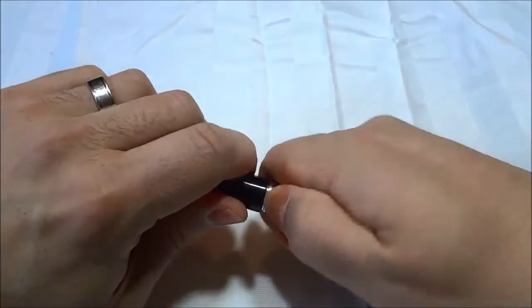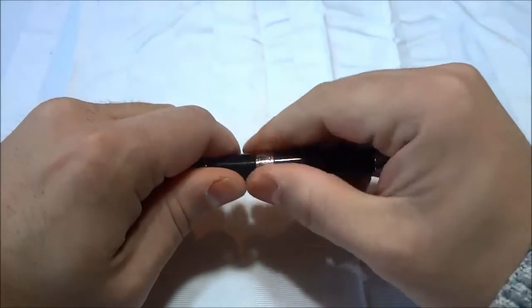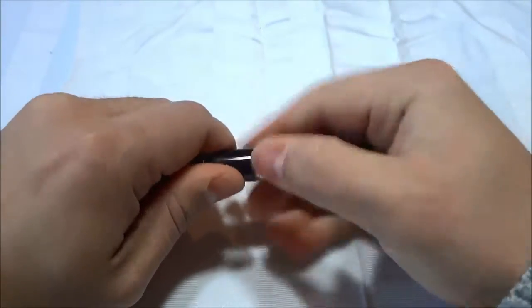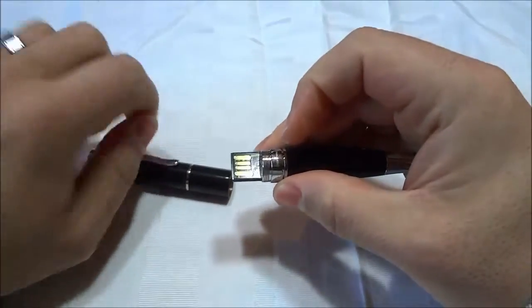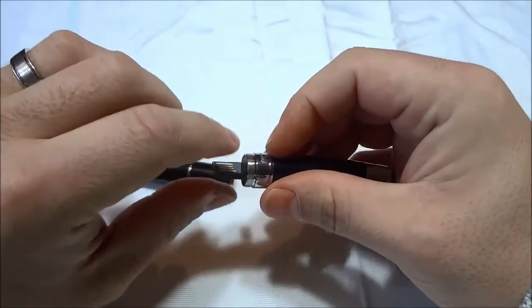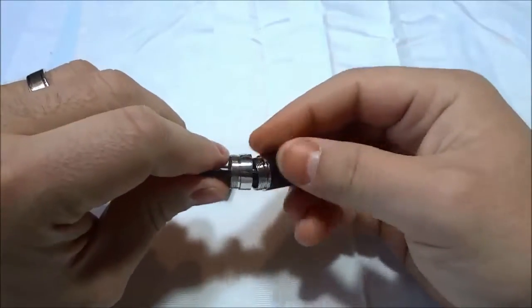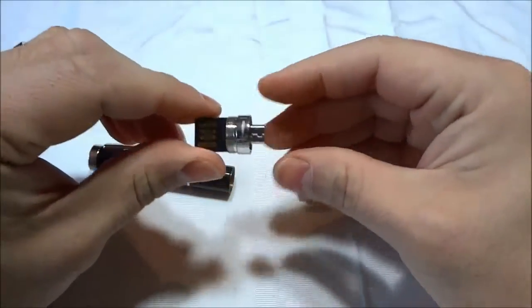So I'm just going to get a good grip of this. I'm going to unscrew this right here just like that. Let's go ahead and take it off. So this is one side of the 32 gigabyte OTG flash drive. And if you remove this piece right here, this is the other side.